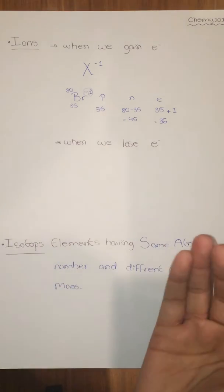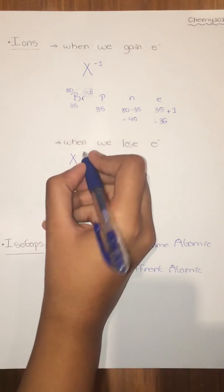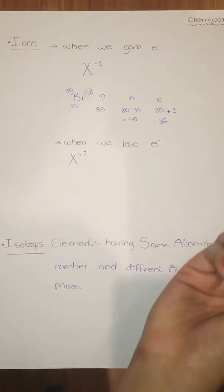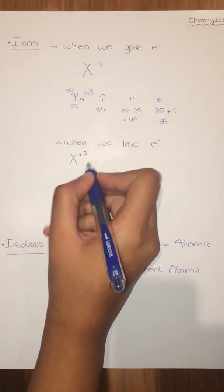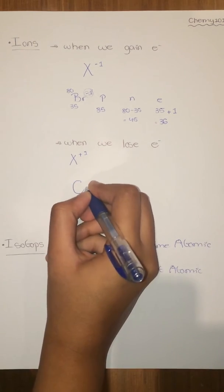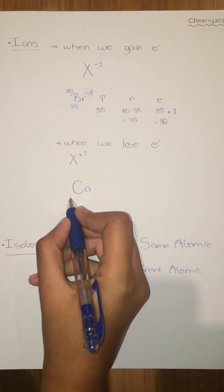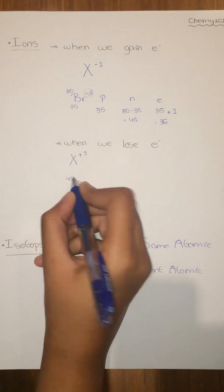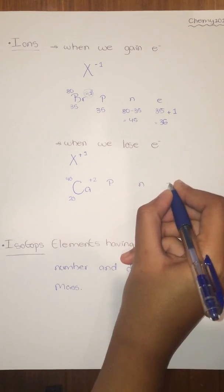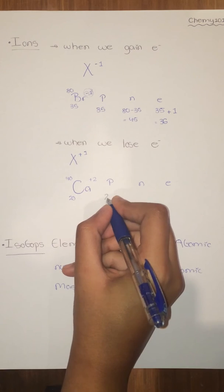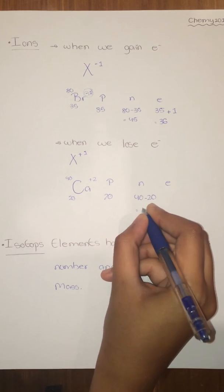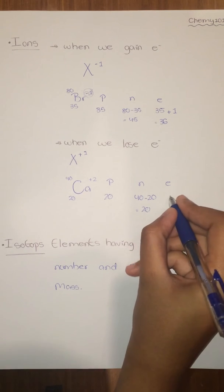If we lose electrons, we will have less negative charge and more positive charge, so the element X will be shown with a plus sign and the charge we lost. For example, plus one means the element lost one electron. We will take calcium (Ca): its atomic number is 20, atomic mass equals 40, and it lost two electrons. Protons equal the atomic number. Neutrons equal 40 minus 20, which equals 20.